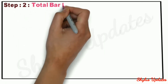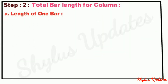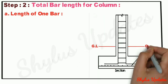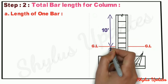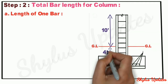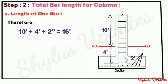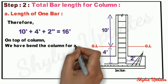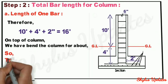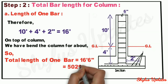Step 2: Total bar length for column. Length of 1 bar: the height of column above ground level is 10 feet and below ground level is 4 feet. The bend length of the rod is 2 feet. When we add these, we get 16 feet. On top of the column, the bar is also bent for about 6 inches. So the total length of 1 bar is 16 feet 6 inches, that is 5029mm.